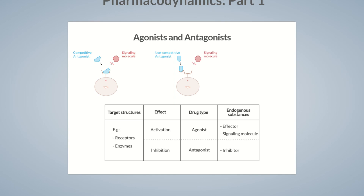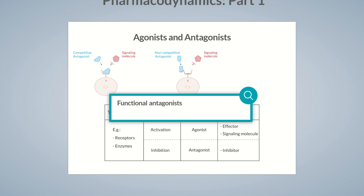To get a more complete picture, we'd also like to mention substances termed functional antagonists. Despite their name, their mechanism of action strongly differs from that of other antagonists. In fact, functional antagonists act like agonists — they bind to a receptor and actively promote a reaction, which then physiologically counteracts a downstream process. The induced reaction therefore reduces the effects of the downstream process without any direct interaction between the functional antagonist and that process. In short, the drug doesn't antagonize the endogenous signaling molecule, but rather a physiological function.